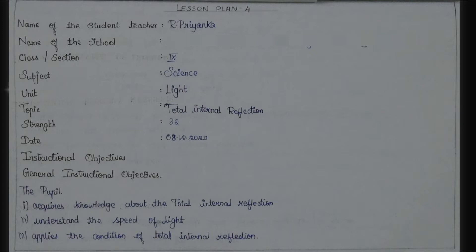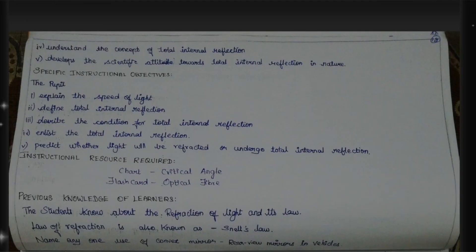The student finds the speed of light and applies the conditions of total internal reflection. The student understands the difference between general reflection and total internal reflection, and the concept is clearly explained.